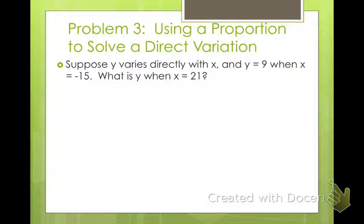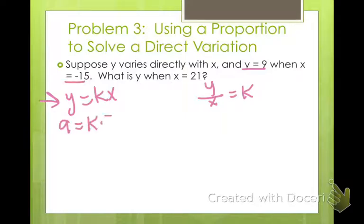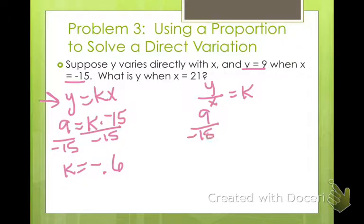Alright, so here we have an actual problem. So you're going to have probably quite a few of these. It says, suppose y varies directly with x, and y equals 9 when x equals negative 15. What is y when x equals 21? Okay, we can set these up in two different ways. I personally like using the equation y equals kx. But you can also do y over x equals k. This one makes more sense in my mind, but you can do it either way. Okay, so I'm going to say that y is 9, x is negative 15. So 9 equals k times negative 15. In order to get k by itself, I would divide both sides by negative 15. And then I get k equals negative 0.6. The same way on the other side, 9 over negative 15 equals k. That still equals negative 0.6.